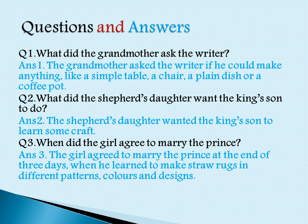Let us start with the question and answers. Question 1: What did grandmother ask the writer? The answer is, the grandmother asked the writer if he could make anything like a simple table, a chair, a plain dish or a coffee pot.